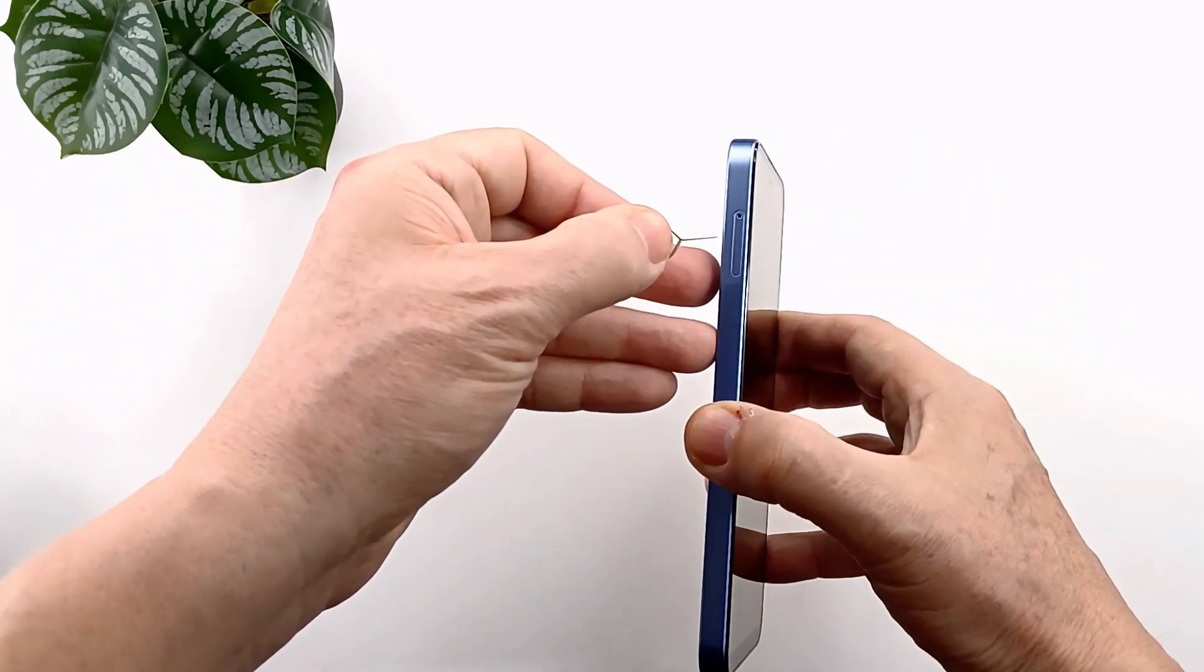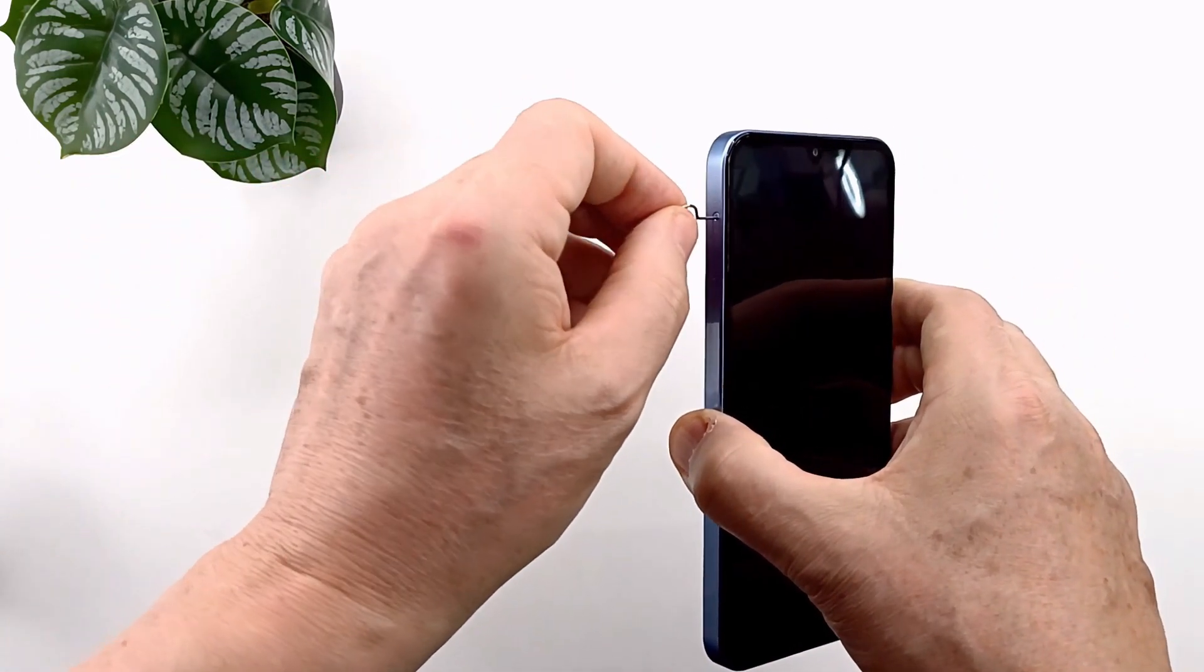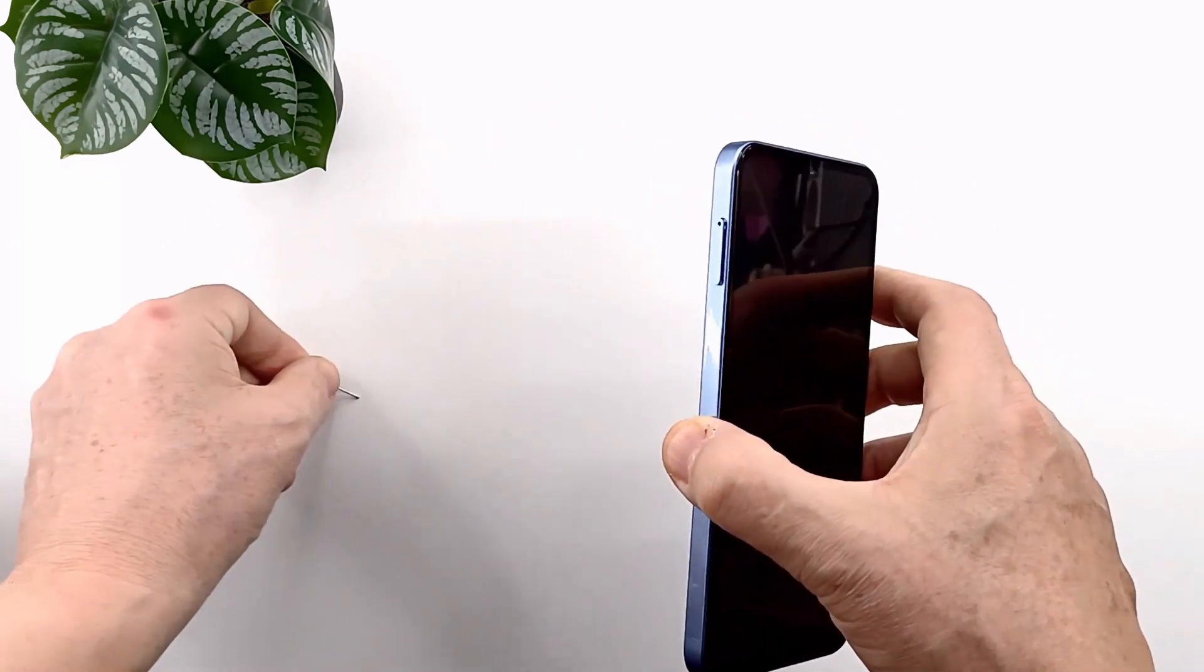Insert the ejector tool that came with your device into the hole on the SIM card tray and push gently until the tray pops out.